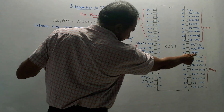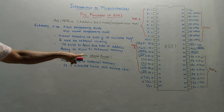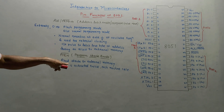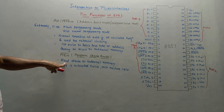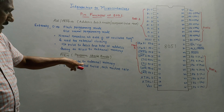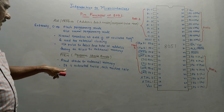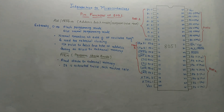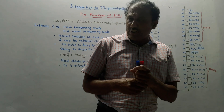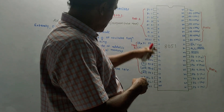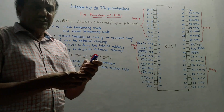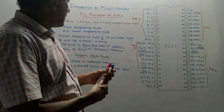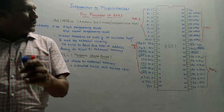The last pin is pin number 29 — PSEN, program strobe enable. As the name indicates, it is the enabling pin to read the strobe from external memory. It is activated twice during each machine cycle. So dear students, this is all about the functioning of pins related to 8051. In the next session, we will discuss the architecture of 8051 in detail. Thank you, thanks a lot for watching this video.